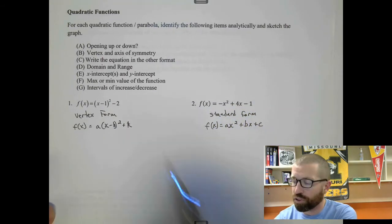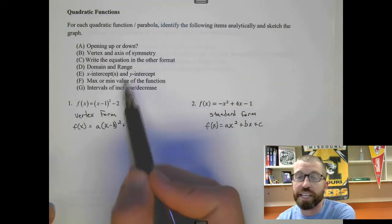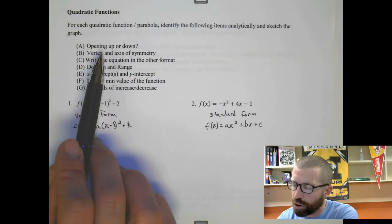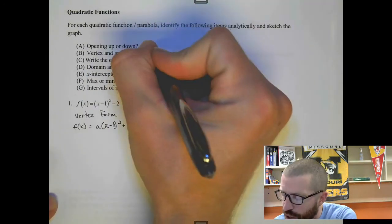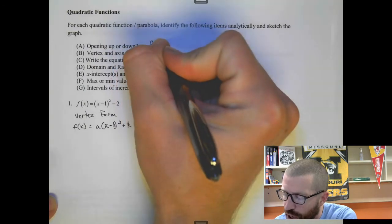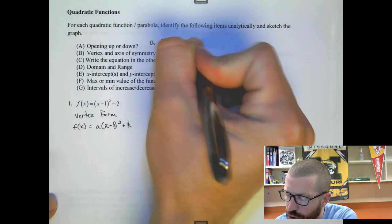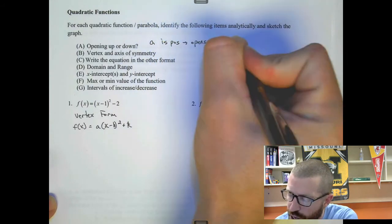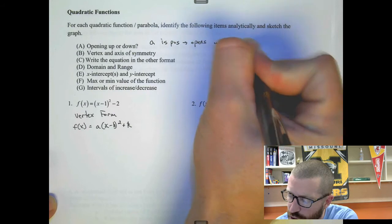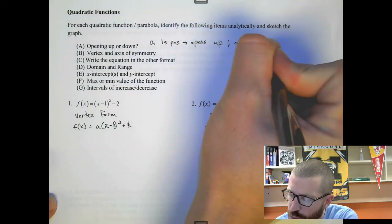We're just going to go through this list and talk about how to find each of these things. So first, opening up or down. You look at the a value. If a is positive, it opens up. If a is negative, then it opens down.